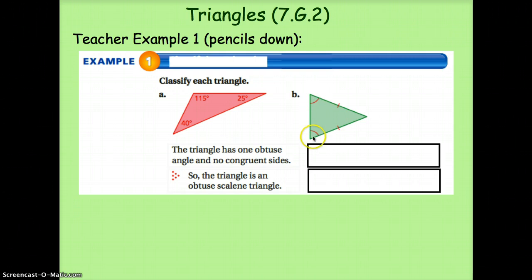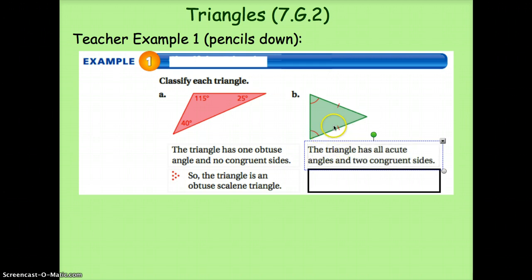Therefore, that means there must be two angles that are the same. And these two that each only have one line in the arc of the angle mean that these two angles are the same size. So this triangle has all acute angles, two congruent sides, and two congruent angles.